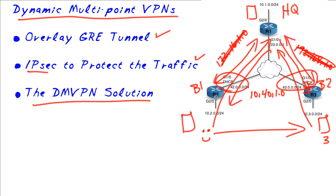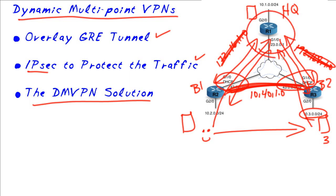They'll each report their IP addresses — received through DHCP or some other method — up to the hub router. And if R2 needs to communicate and get to the 10.3 network, R2 can ask the hub: what's the global address for R3? R1 responds, and then R2 can build a direct GRE connection and IPsec connection between itself and R3, cutting out the middleman.